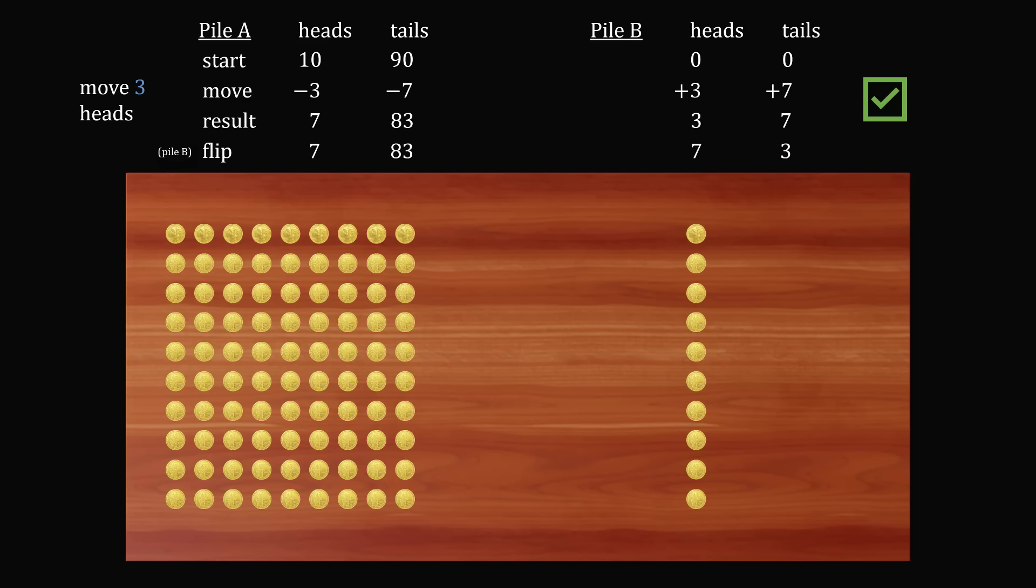In fact, this will work for every single possibility. Imagine we were moving three coins that were showing heads, we would still end up that both piles have the same number of heads. This is true for 4. It will also be true for 5. And it will be true for every possibility where we are moving a number of heads that's between 0 and 10 inclusive. So it turns out that this solution will always work.